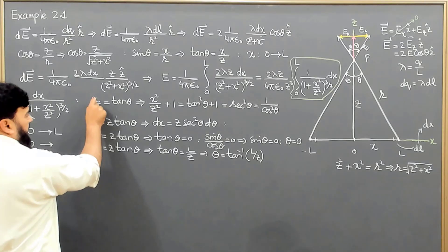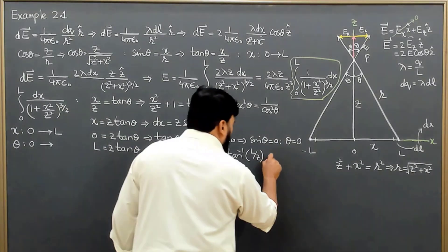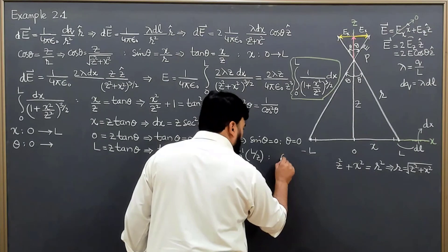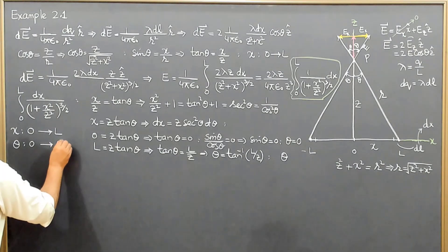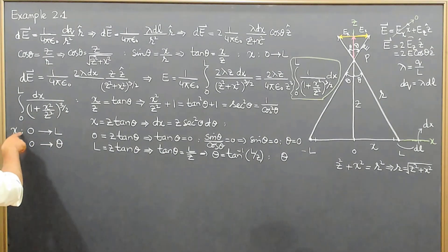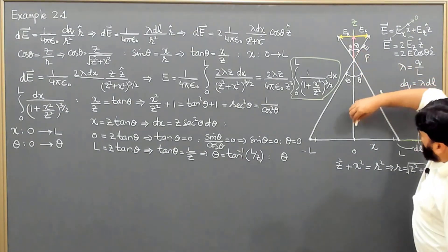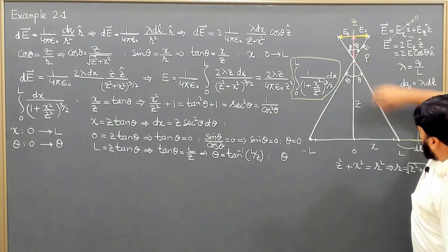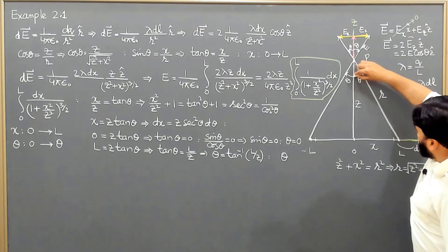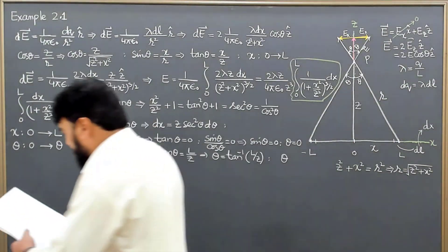For the upper limit, x = L gives us L = z·tan θ, so tan θ = L/z, which implies θ = tan⁻¹(L/z). So our limits convert as: x goes from 0 to L while θ goes from 0 to θ = tan⁻¹(L/z), as we can see from the geometry.